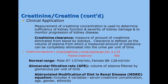Clinically, we use creatinine to assess kidney function, the severity of kidney damage, and to monitor the progression of kidney disease. We do this with a test called creatinine clearance, which measures the amount of creatinine eliminated from the body by the kidneys. Clearance is defined as the volume of plasma from which a measured amount of substance can be completely eliminated into the urine per unit of time. The calculation is: urine creatinine × (volume in mL/min) ÷ plasma creatinine × (1.73 ÷ body surface area). Normal range is 97–137 mL/min for males and 88–128 mL/min for females.